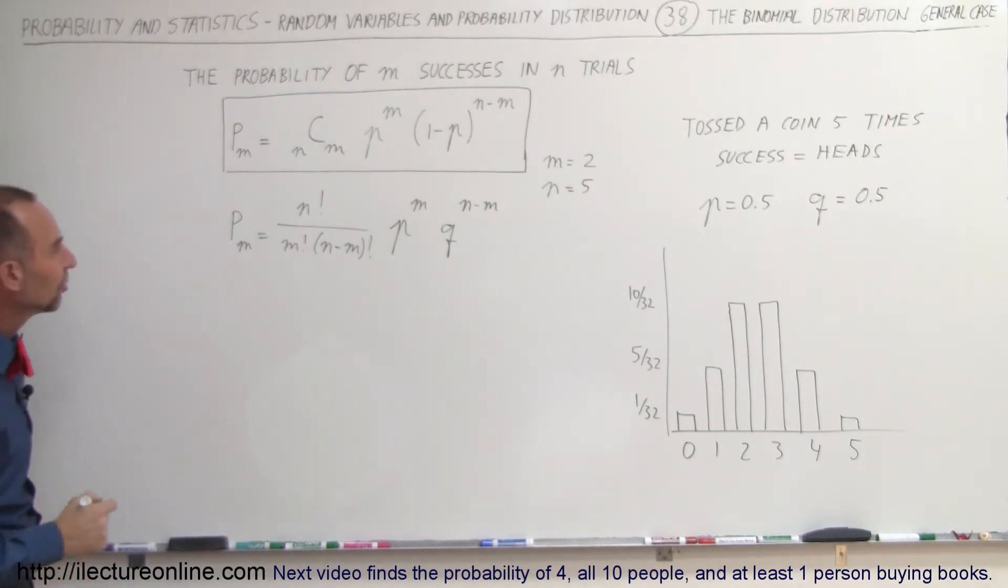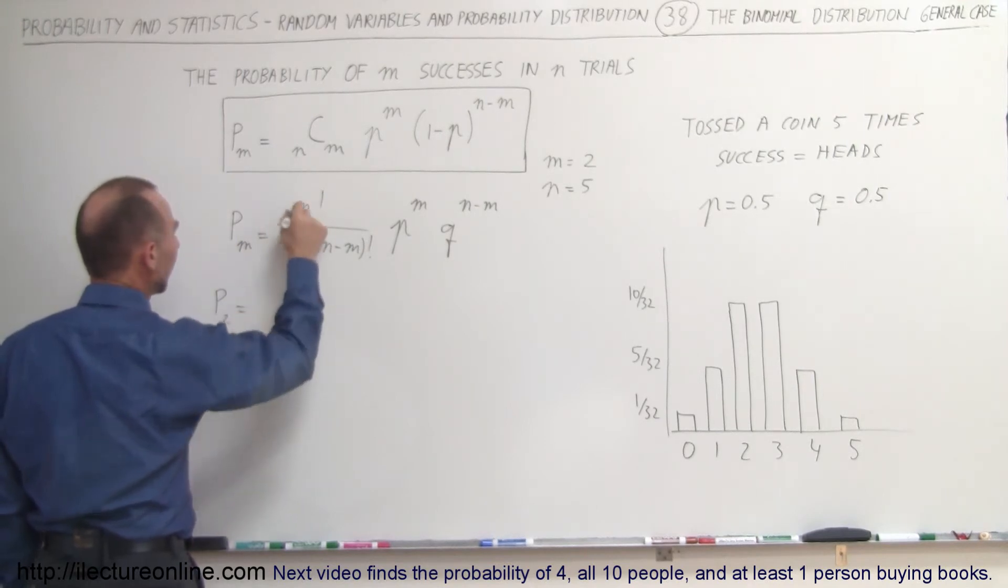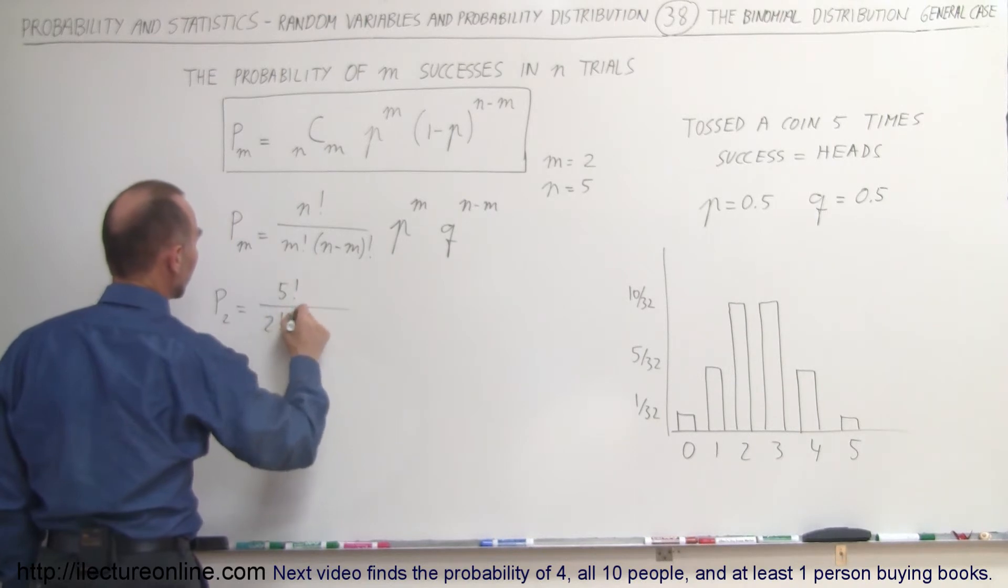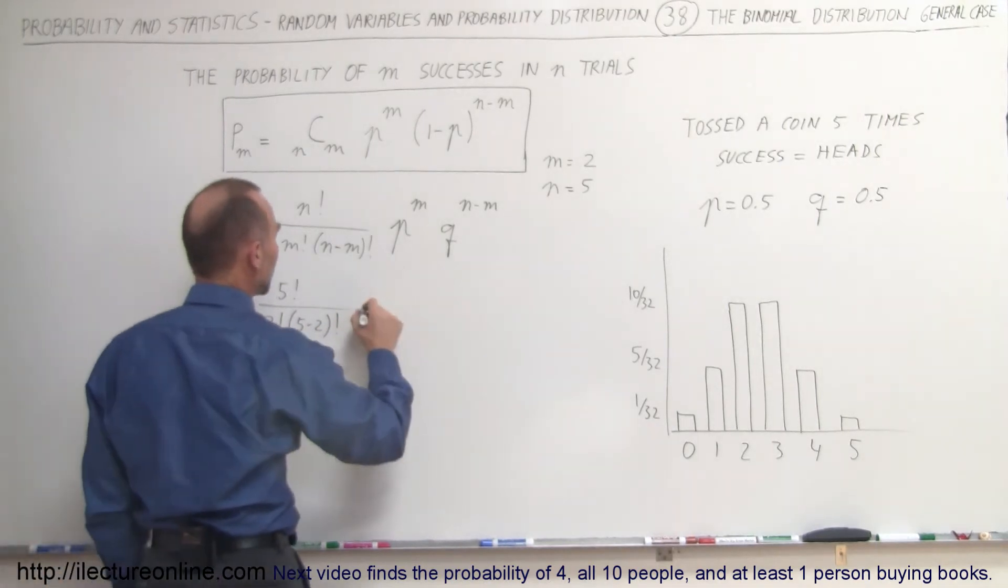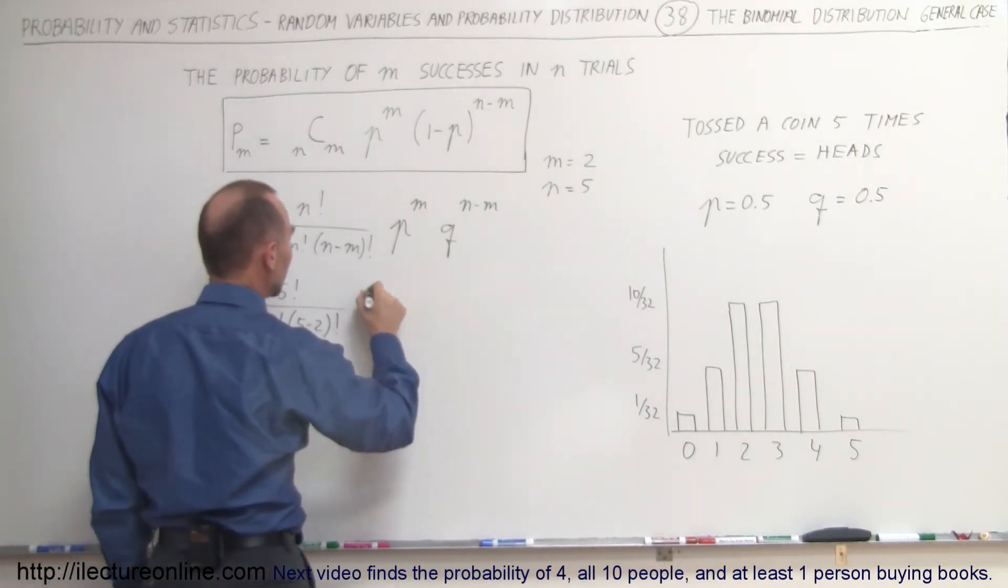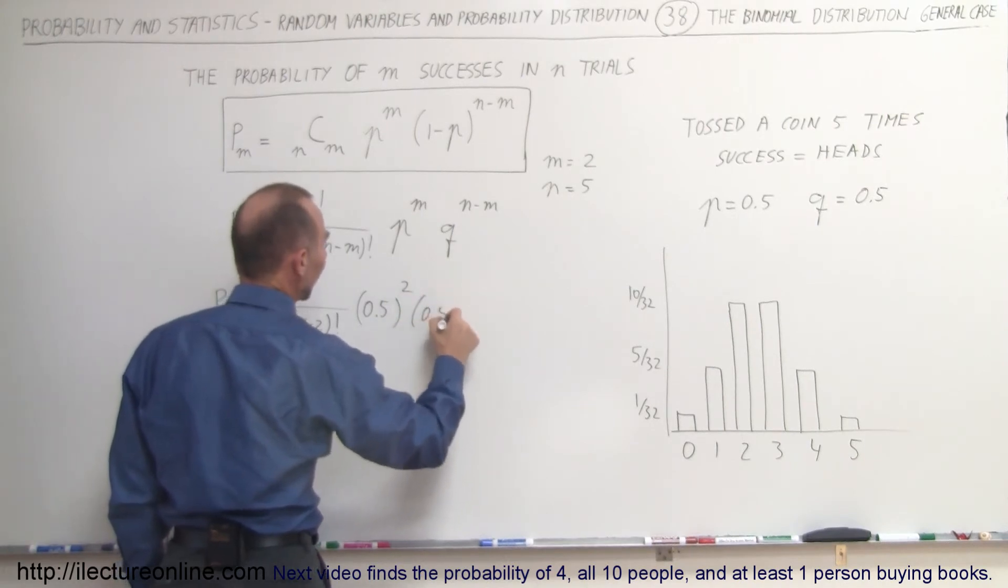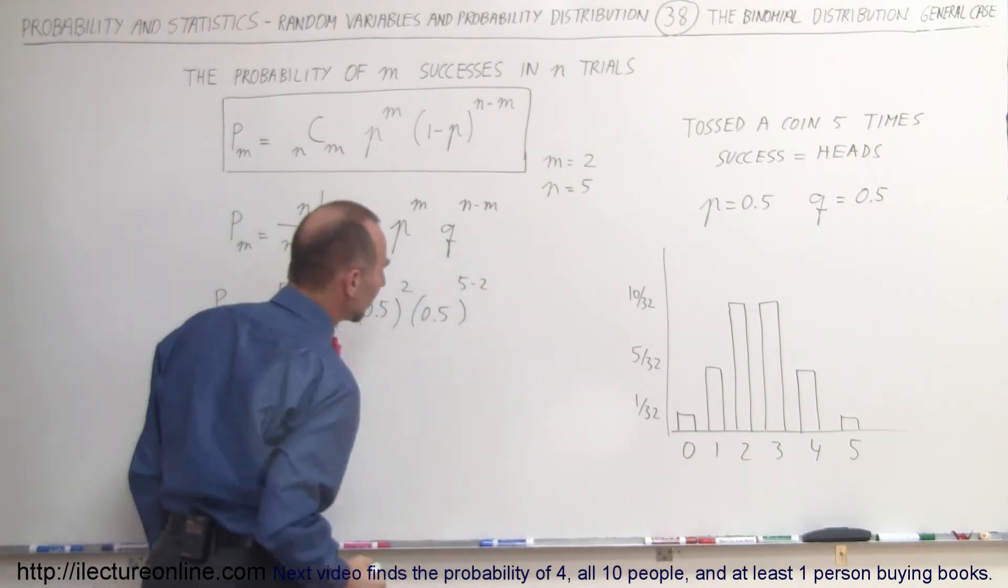Let's plug all those numbers in and see what we get. The probability to get two successes is equal to N factorial which is five factorial divided by two factorial times five minus two factorial, times the probability 0.5 raised to the second power, and then 0.5 raised to the five minus two, that would be third power.